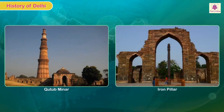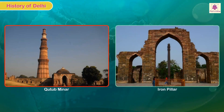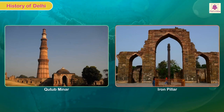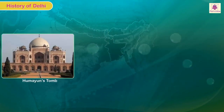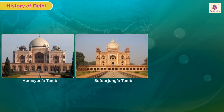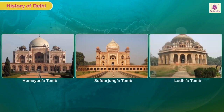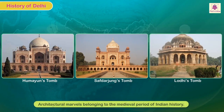The remains of the Qutb complex, comprising the famous Qutb Minar and iron pillar, Humayun's tomb, Safdarjang's tomb, and Lodi's tomb, are architectural marvels belonging to the medieval period of Indian history.